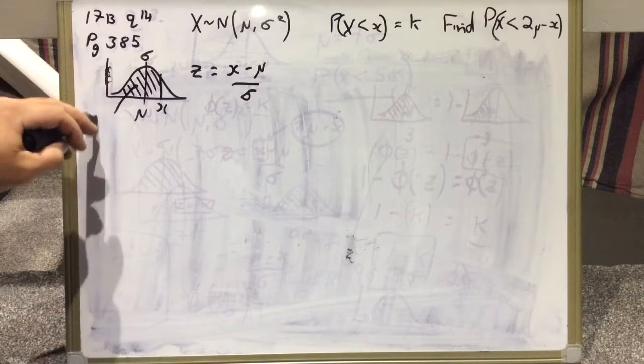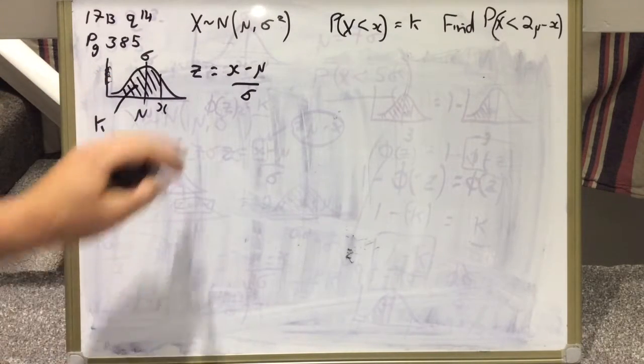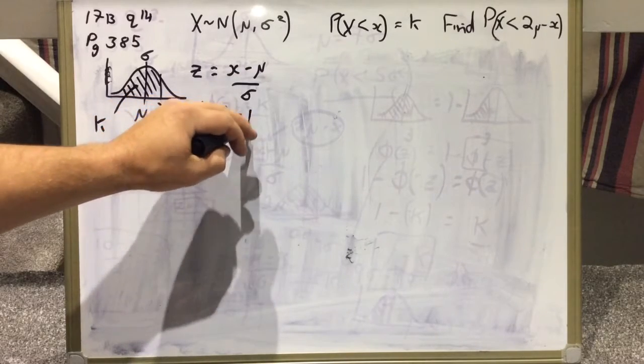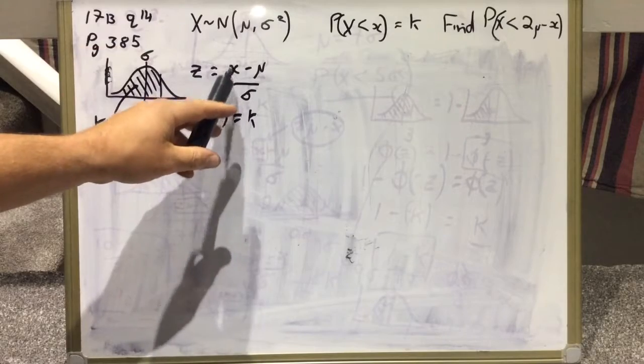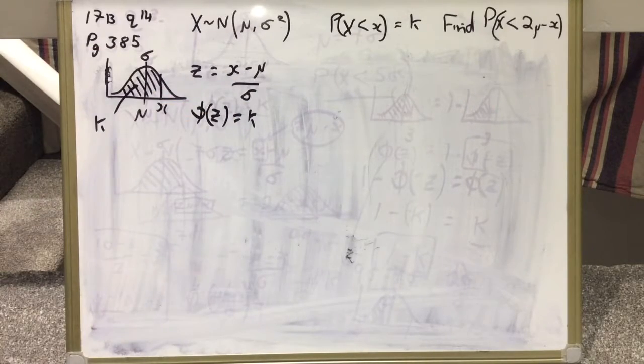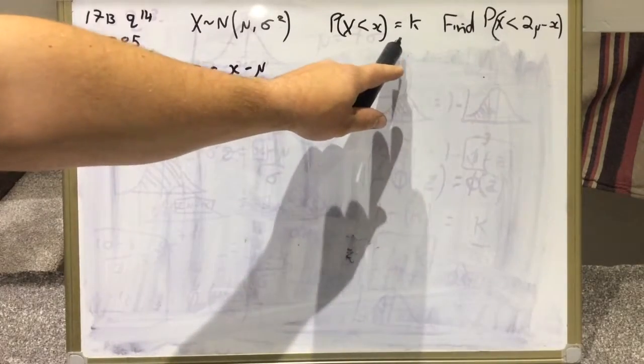It's less than because we're told it's less than, and the outcome of that is equal to K. The area of this is in fact K, so when we take phi of that Z value it is equal to K. There's nothing to plug into this because X is X, mu is mu, and the standard deviation is sigma. That's just what we're told at this point.